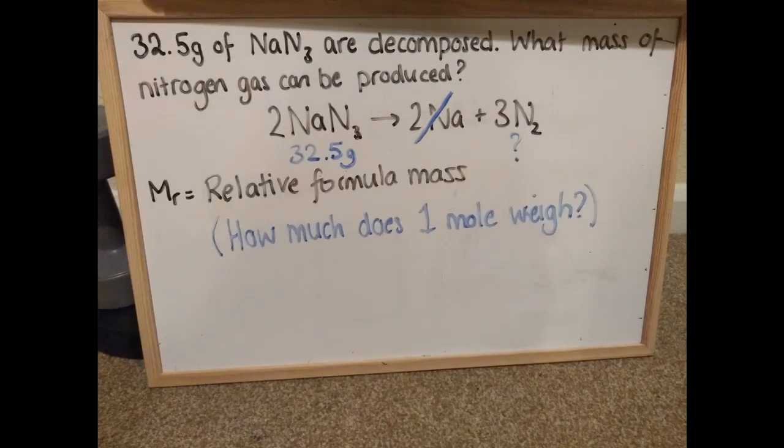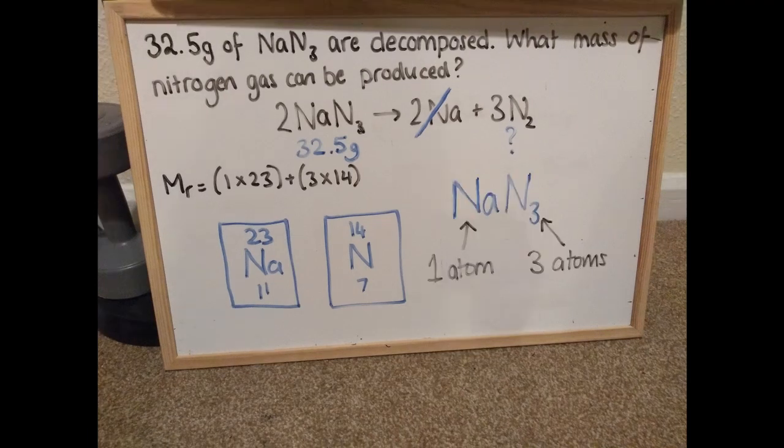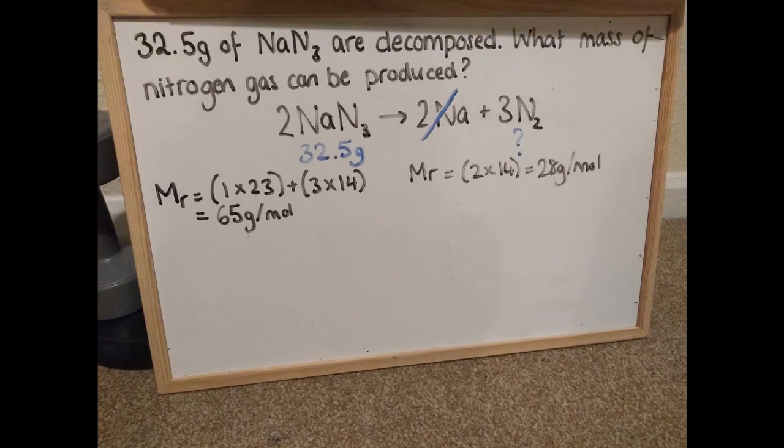Once I've crossed things out, my first real step is to work out the relative formula masses. Now remember, a relative formula mass is the mass of one mole, so for now I'm just going to ignore the coefficients, these big numbers at the front. We'll use them later but for now we're calculating MR. I use the periodic table to find the relative mass of each element. That's the bigger of the two numbers. I multiply that relative mass by the number of atoms of each type. So here in sodium azide there's one sodium with a mass of 23 and three nitrogen atoms with a mass of 14 each. That gives me a total MR of 65 grams per mole. In other words, one mole would weigh 65 grams. Now I'm going to look at the other side of my equation and work out the MR here. I've got two atoms of nitrogen and I know that nitrogen has a mass of 14, so that gives me a total MR of 28.